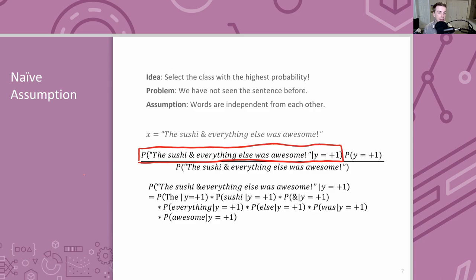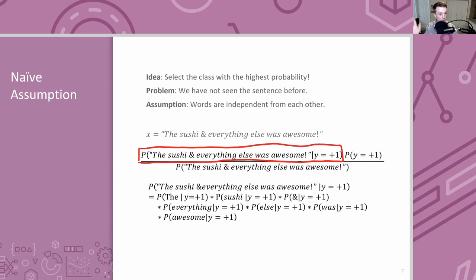Naive Bayes makes the naive assumption that words don't depend on each other within a sentence. Using independence, we can break up the probability of seeing a sentence into a product: P('the') × P('sushi') × P('and') × P('everything') and so on. This product rule only applies under independence — like flipping coins, the probability of heads then tails is just P(heads) × P(tails).